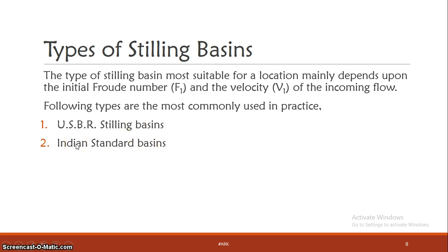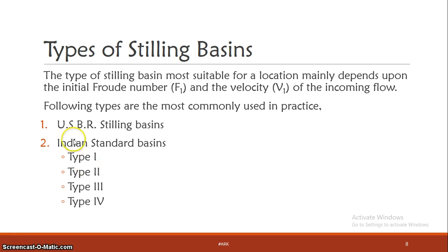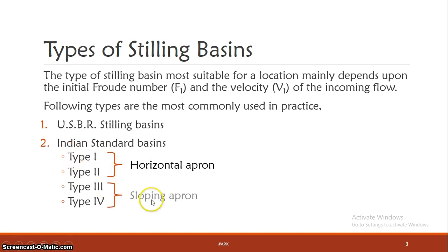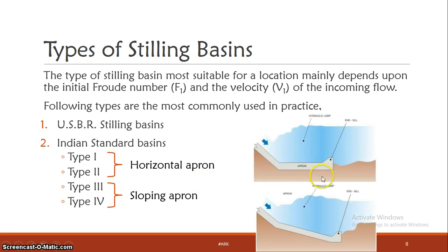Looking at the Indian Standard basins, there are four types: Type 1, Type 2, Type 3, and Type 4. Type 1 and Type 2 are horizontal floor basins. Type 3 and Type 4 have a sloping apron floor. The Indian Standard Type 1 and Type 2 design details can be found in the reference figures.